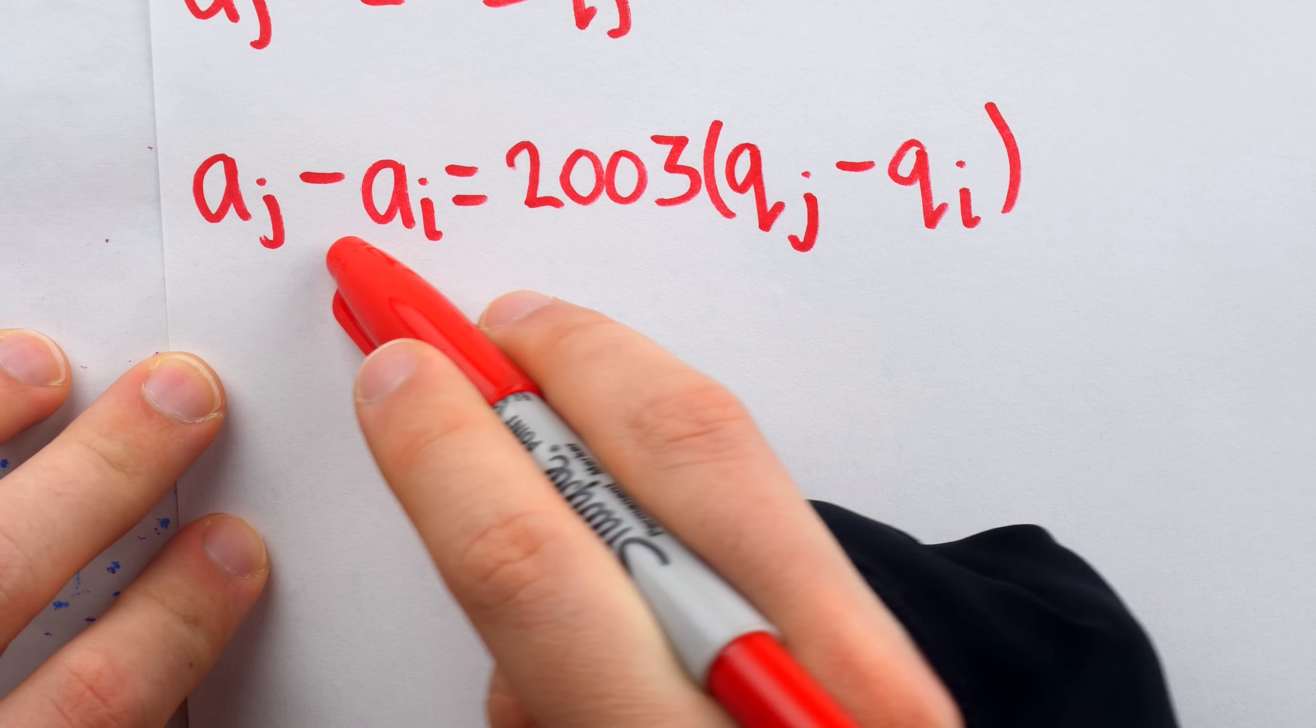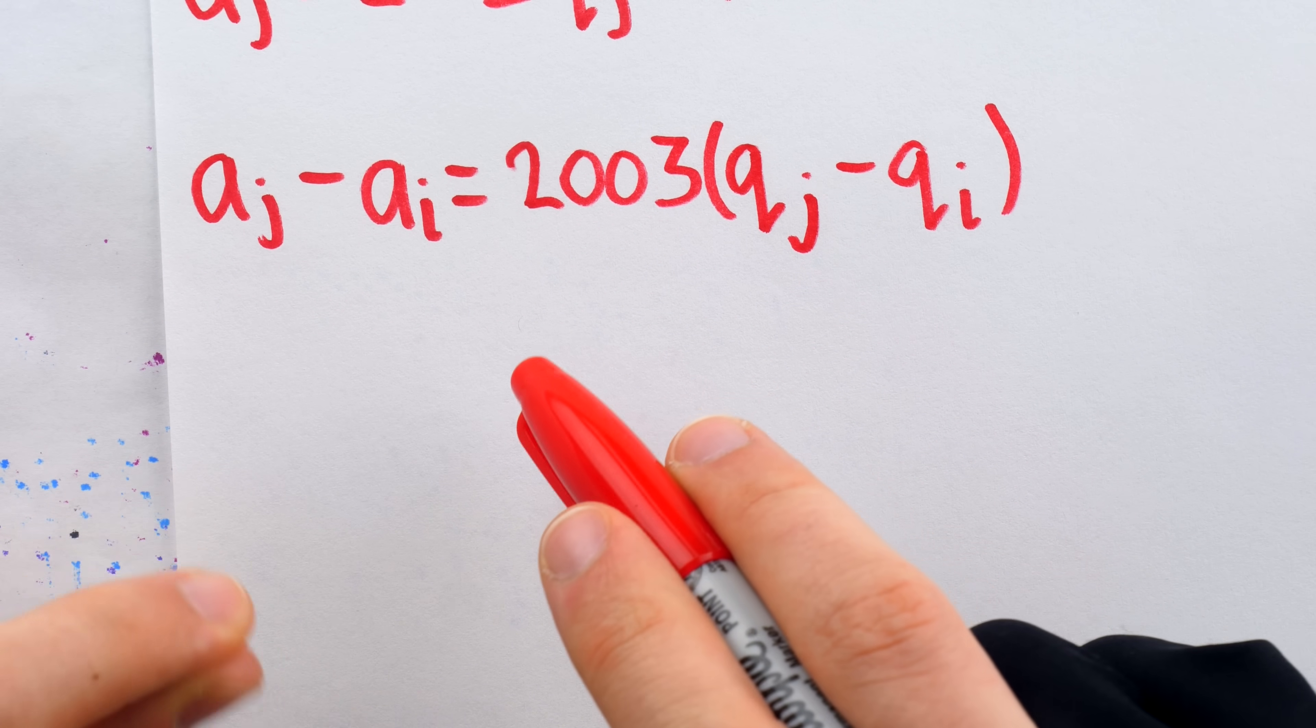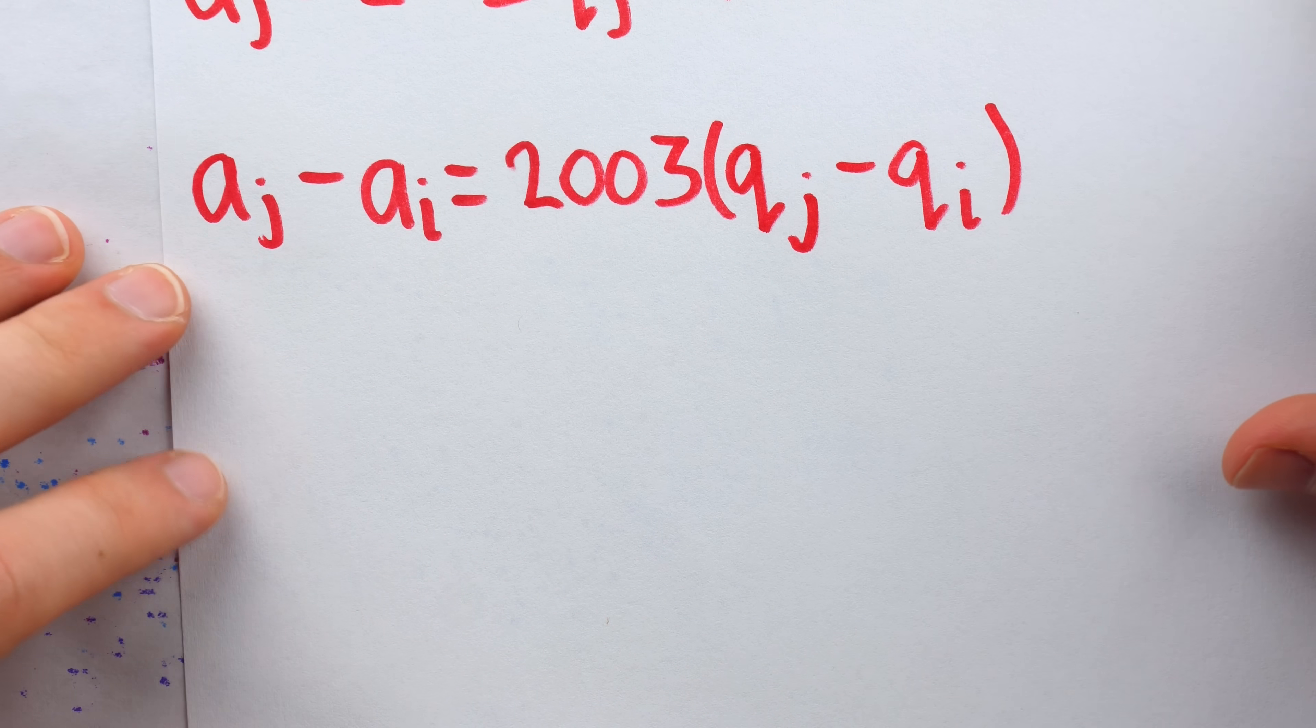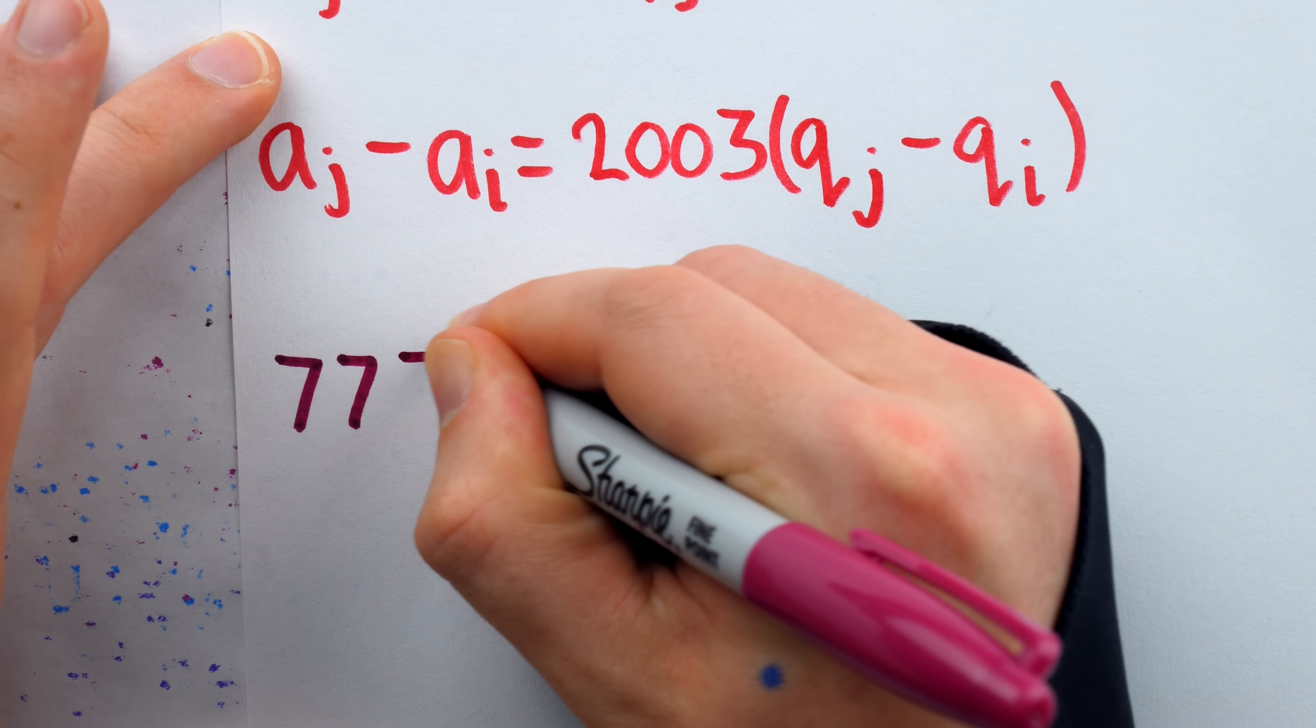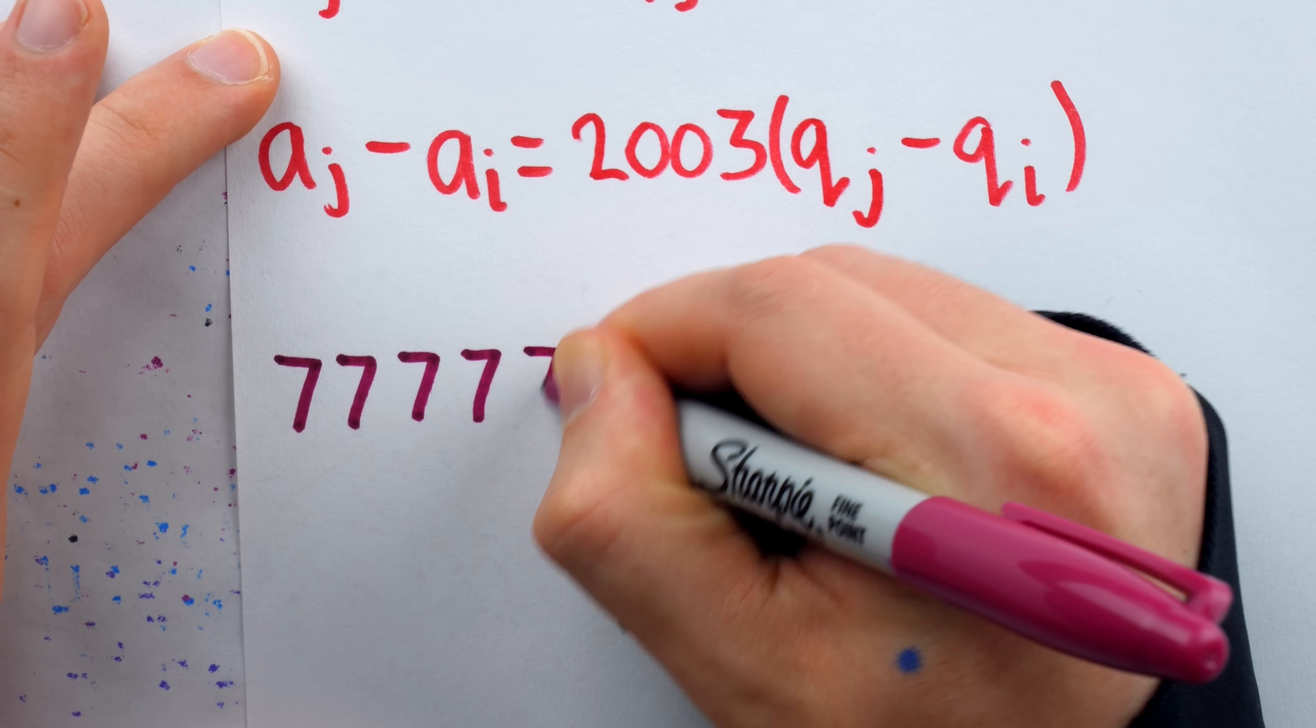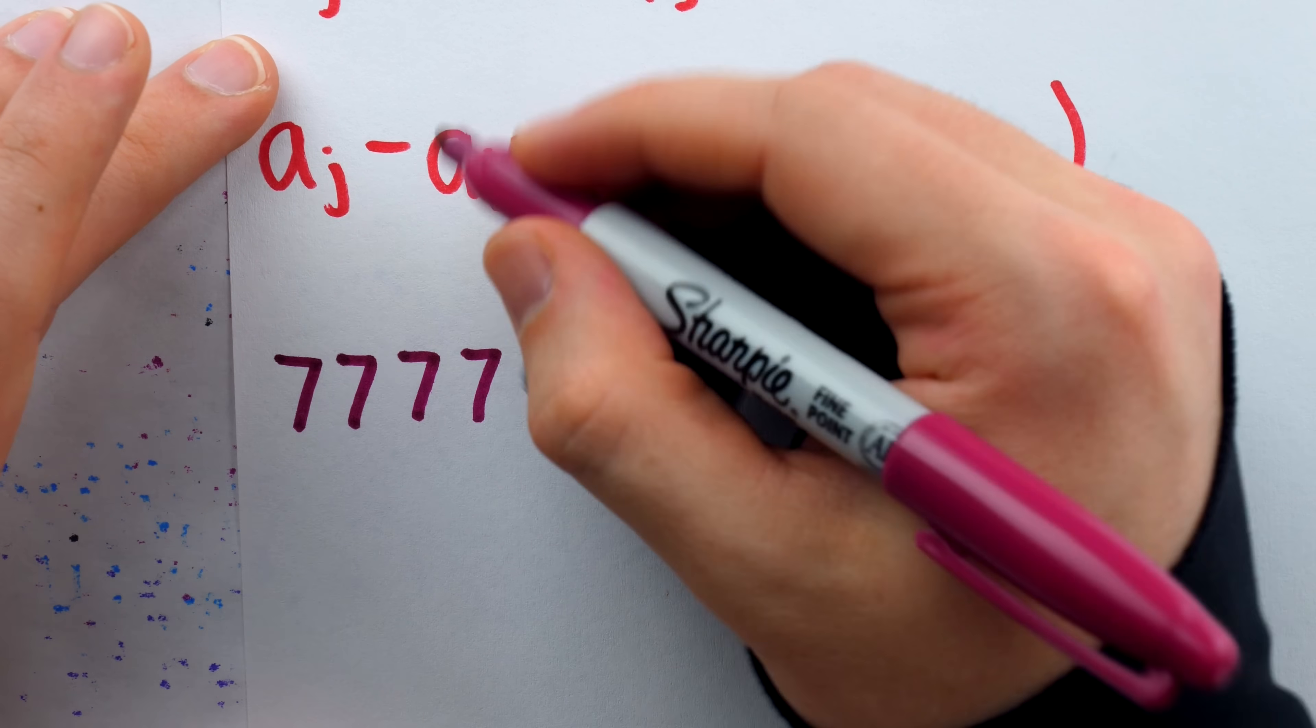However, all we have to do is write out what this subtraction might actually look like to get a hint as to how we can use this to complete the solution. What is the term A_j look like? Well, it's just a bunch of sevens. How many exactly isn't important for our argument right now. Let's just write out six of them.